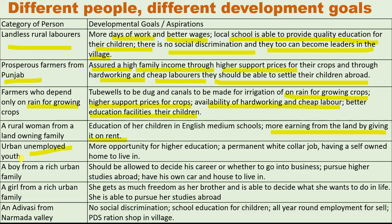Urban unemployed youth — what can be the aspirations of such people? For example, more opportunities for higher education, a permanent white-collar job meaning a government job, and having a self-owned home to live in. Such people, after getting education, expect a permanent government job and their own home.